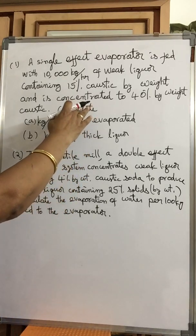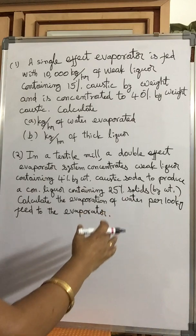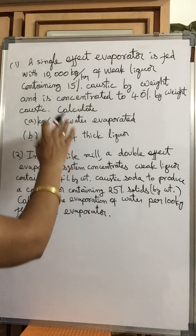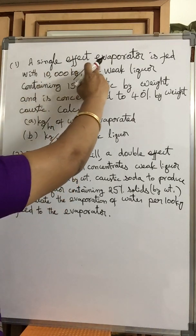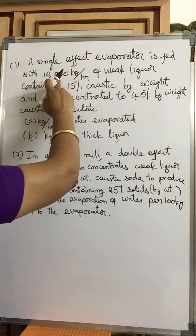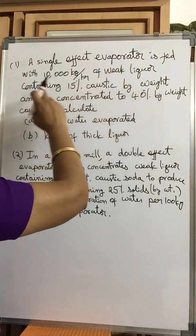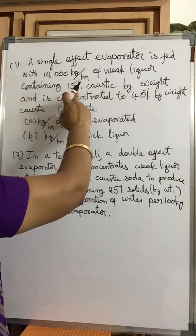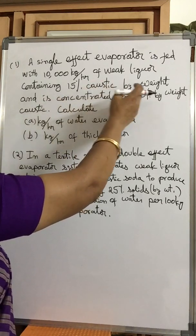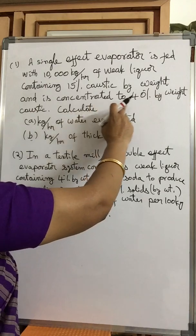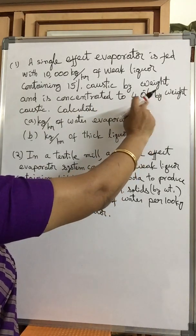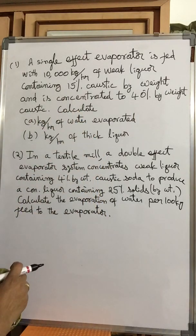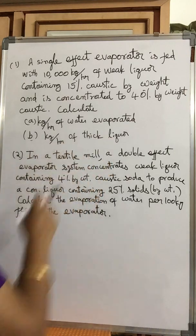We will discuss two problems in evaporation — evaporation without crystallization. These are two simple, small problems. First problem: a single effect evaporator is fed with 10,000 kg per hour of weak liquor — weak liquor means dilute solution — containing 15% caustic soda (NaOH) by weight, and is concentrated to 40% NaOH by weight.